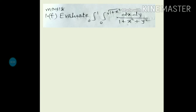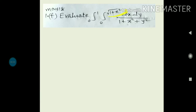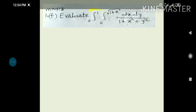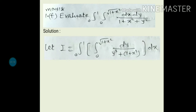First, you need to identify the order of integration, and then in that order you will integrate one by one with respect to both variables. The order of integration is identified from the limits. These are the limits for the first order of integration, and these are the limits for the second variable. Since the limits contain x, these are the limits of y — y is a function of x. So we will integrate with respect to y first, and then perform the second integration with respect to x.